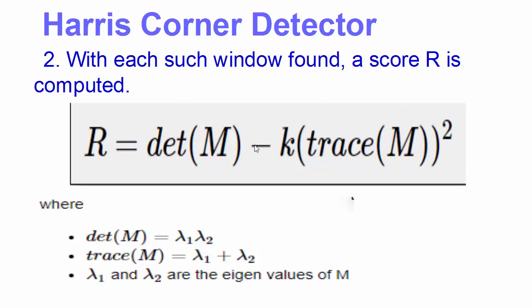R is equal to this value, and the M we have already seen in the first step. In this equation, det(M) equals λ₁ multiplied by λ₂, and trace(M) equals λ₁ plus λ₂, where λ₁ and λ₂ are the eigenvalues of M. If you want to go into the details, you can refer to some book or the Wikipedia page to learn more about this equation.